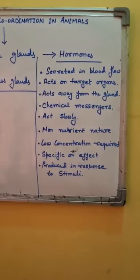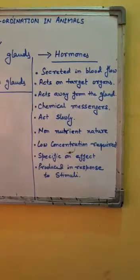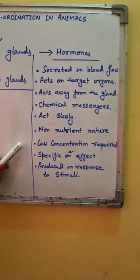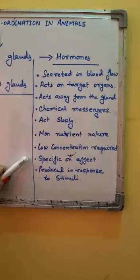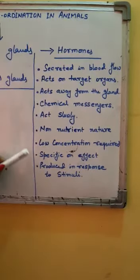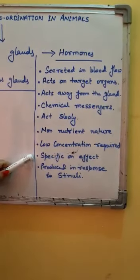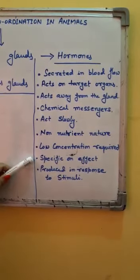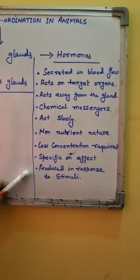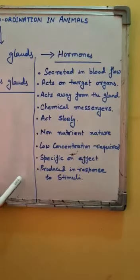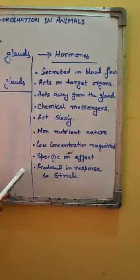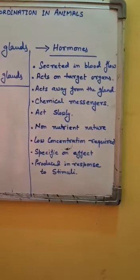Hormones are required and effective in very low concentration. They act specifically on special target organs — even though they are dissolved in the blood flow and reach each and every cell and tissue of the body, they act only on the specific target cell or target tissue. Hormones are generally produced in response to particular stimuli; when the organism is exposed to some stimuli, the hormones are produced in response to that stimuli.